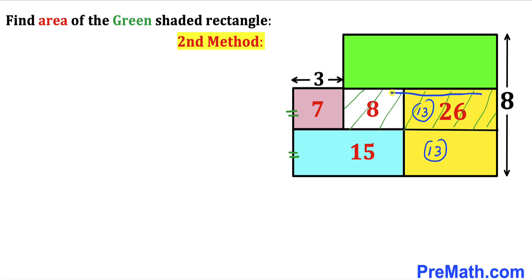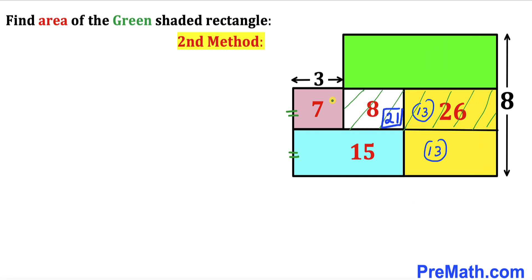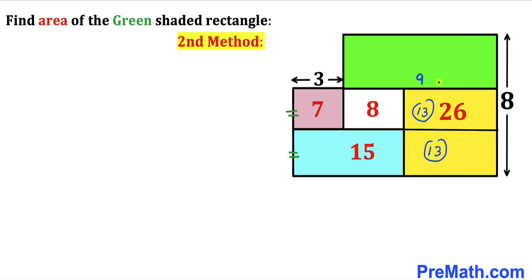Focusing on the shaded rectangle, its area is the sum of 8 and 13, which is 21. Now observe that the pink rectangle is 7 and the shaded rectangle is 21, so the ratio is 1 to 3. Since the pink side is 3 units, this side length is 3 times 3, giving us 9. So the whole side length of this rectangle is 9 units.